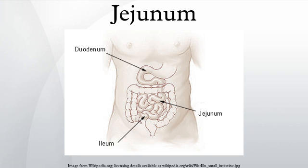The transport of nutrients across epithelial cells through the geodunum and ileum includes the passive transport of sugar fructose and the active transport of amino acids, small peptides, vitamins, and most glucose. The villi of the geodunum are much longer than in the duodenum or ileum.